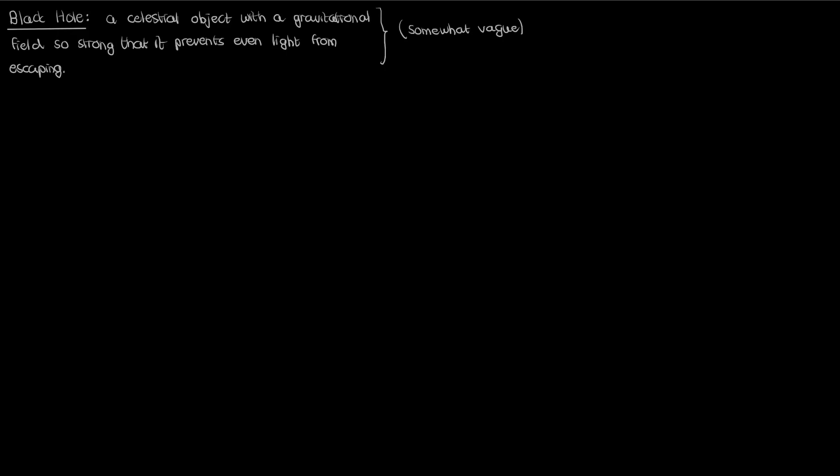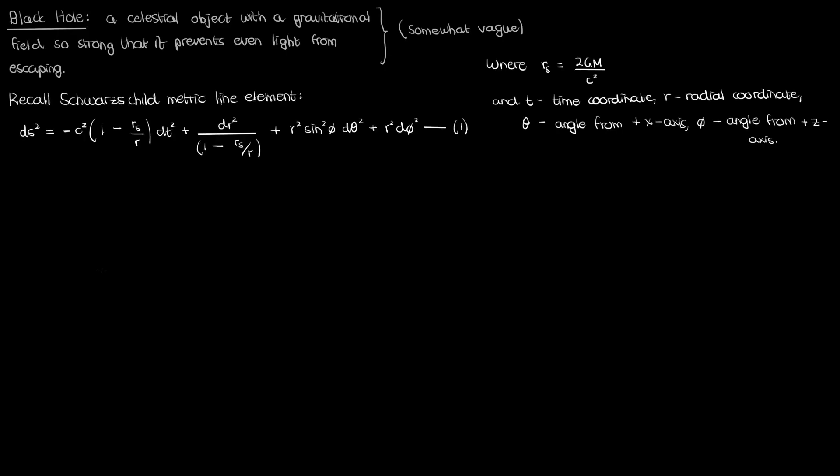So let me describe what a Schwarzschild black hole means by bringing back the Schwarzschild metric in equation 1. I've also copy pasted the definitions of the Schwarzschild radius and each of the individual coordinates here. Now specifically, equation 1 represents our exterior Schwarzschild geometry, the geometry of space-time outside our spherical mass. If our spherical mass had a physical radius capital R, which was larger than its Schwarzschild radius, we'd have a regular old planet or star, nothing special.